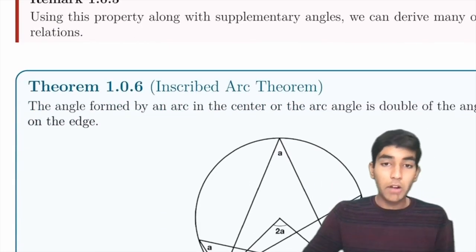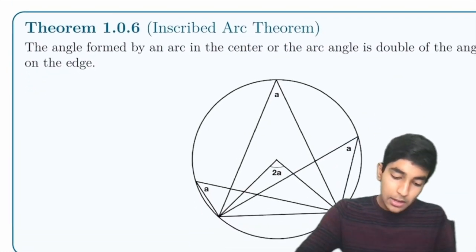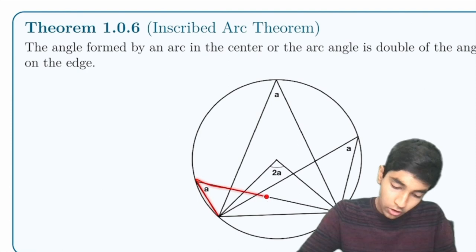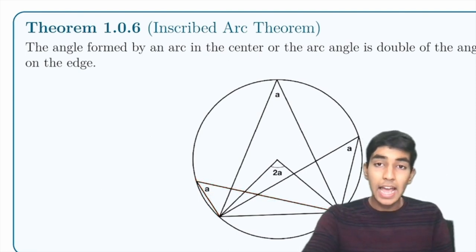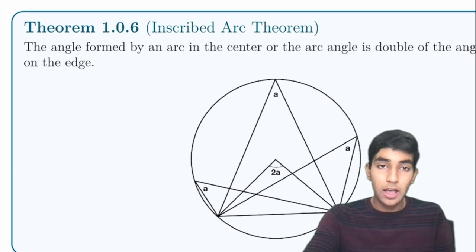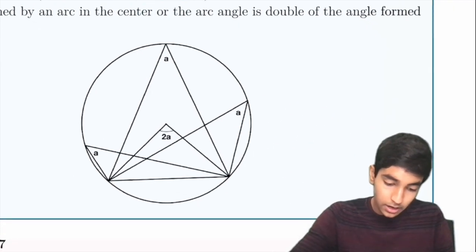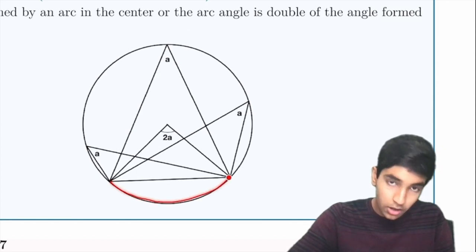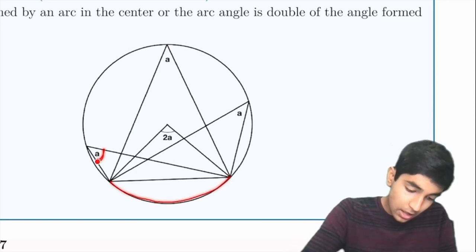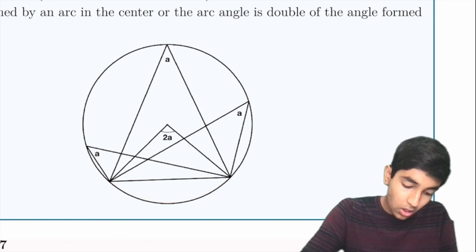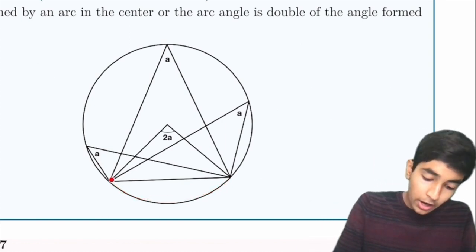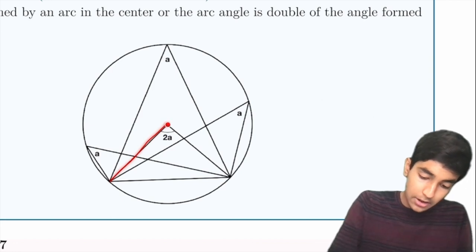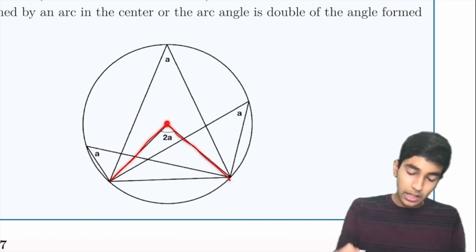Next is the inscribed angle theorem. If you have an inscribed angle in a circle, this angle is half the angle of the inscribed arc. The inscribed arc is just the arc over here. So this angle is half the angle of the arc, which is the angle it forms with the center of the circle.